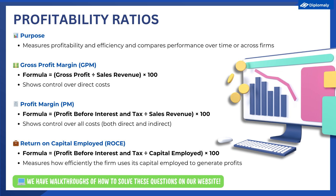The last ratio is the return on capital employed. This looks at how well a firm can use its capital employed to generate profits — it helps us understand how efficient a firm is in generating profits. It is calculated by profit before interest and tax divided by capital employed times 100. Capital employed is made up of long-term loans or non-current liabilities, as well as the equity section of the balance sheet: share capital and retained profit.